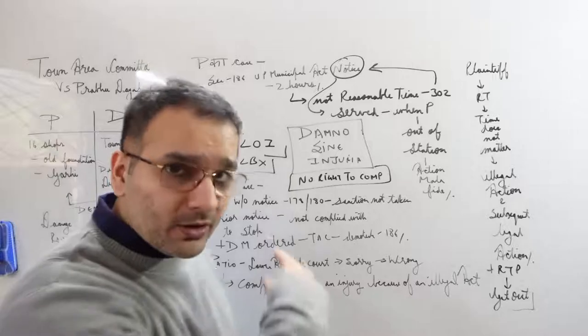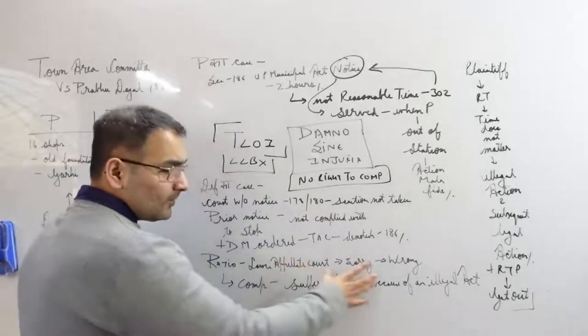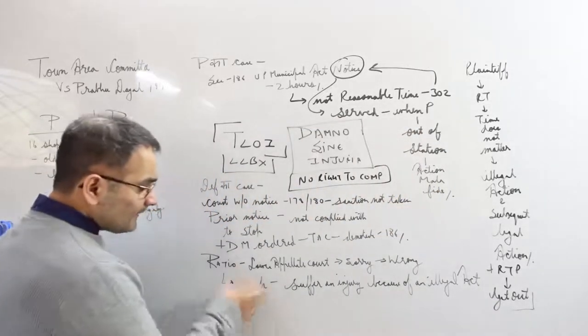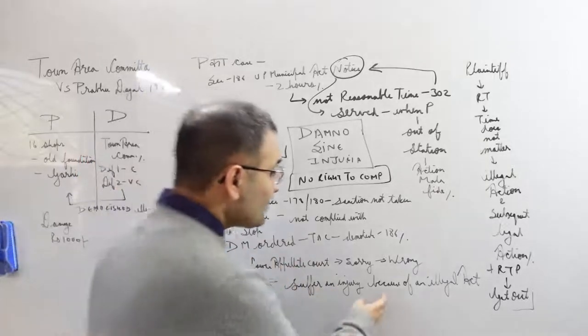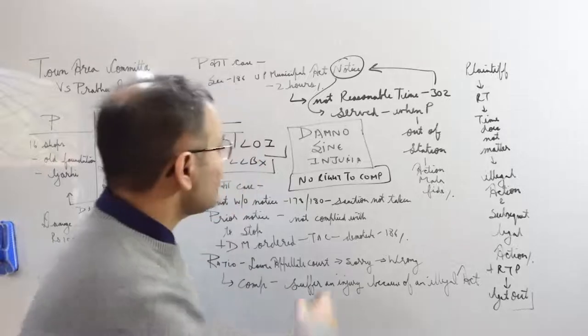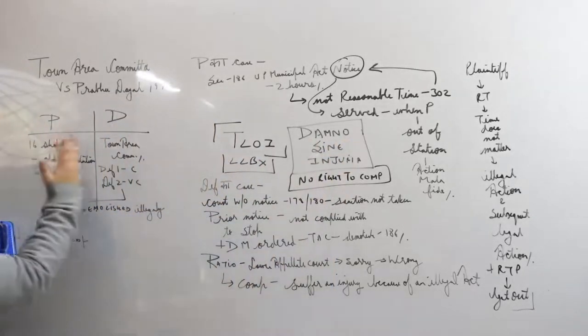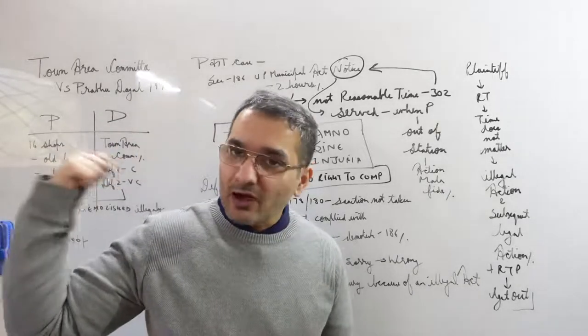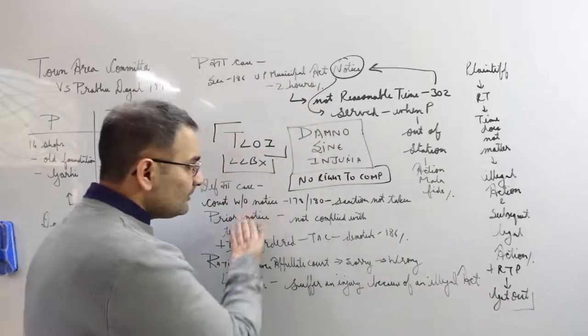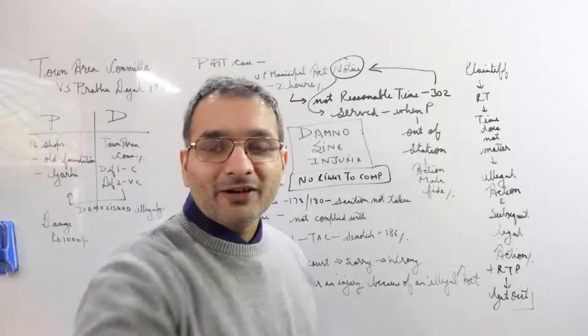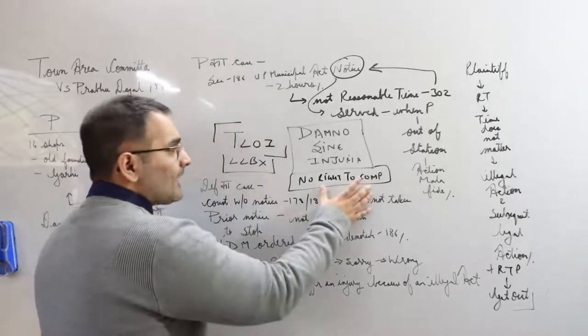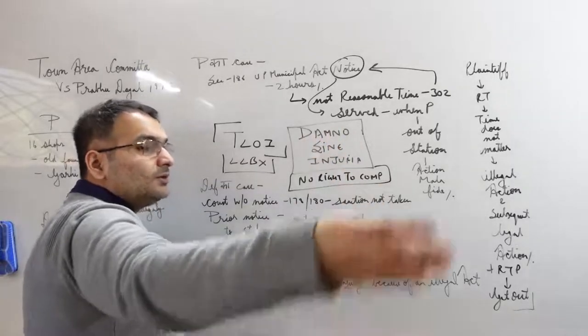So the court said - the ratio in this, basically the lower appellate court awarded damages to the plaintiff. This is basically a higher court. The lower appellate court misunderstood the case and your decision is wrong. The court overturned it, and this is the key line that you will have to write: the plaintiff is entitled to compensation only if he suffers an injury because of an illegal act. Your shops have been demolished, but those shops were illegal to begin with. So how exactly are we going to compensate you for that? Your shops were illegal, you never complied with the notices, on top of it the district magistrate ordered destruction of shops.